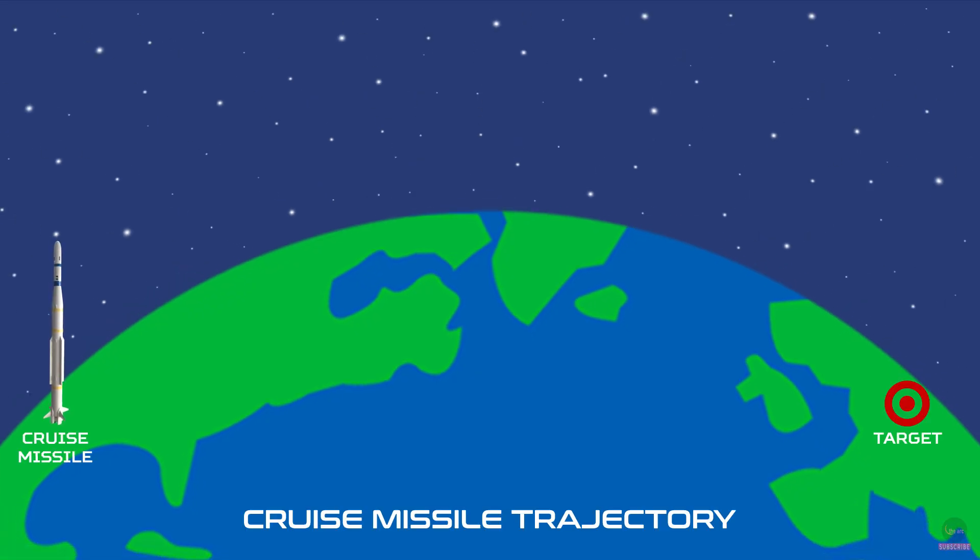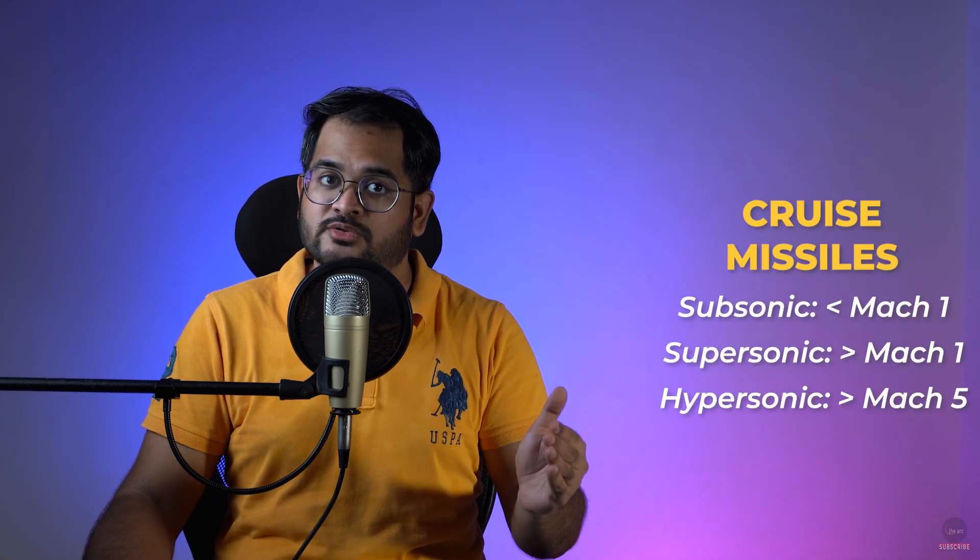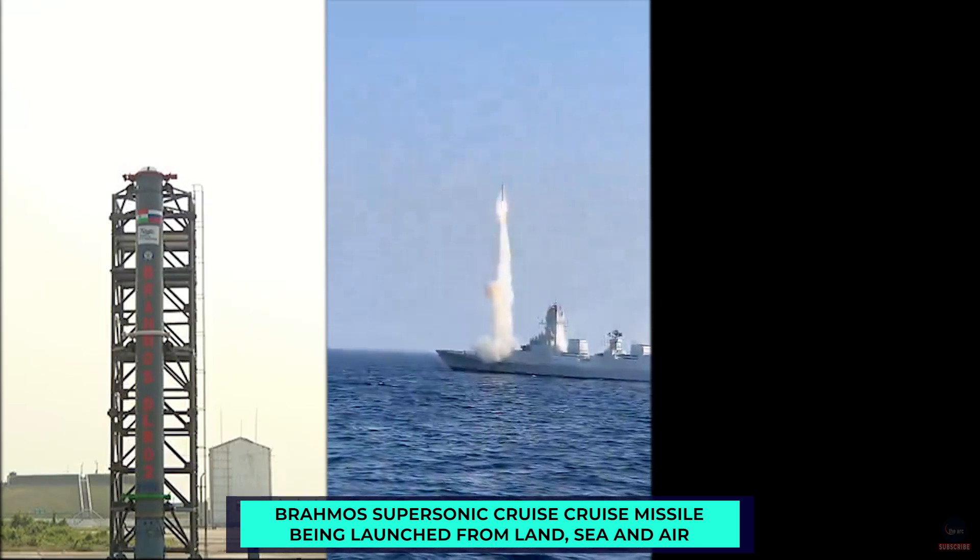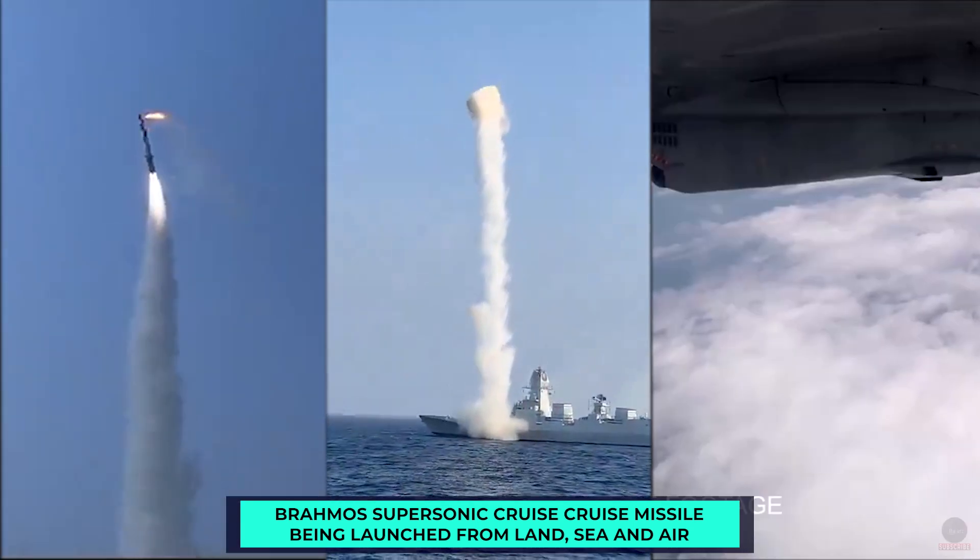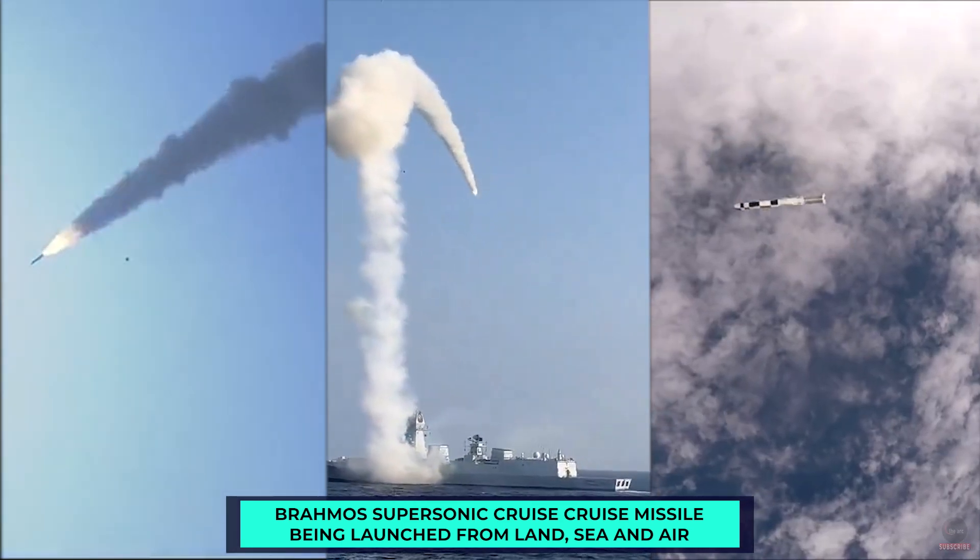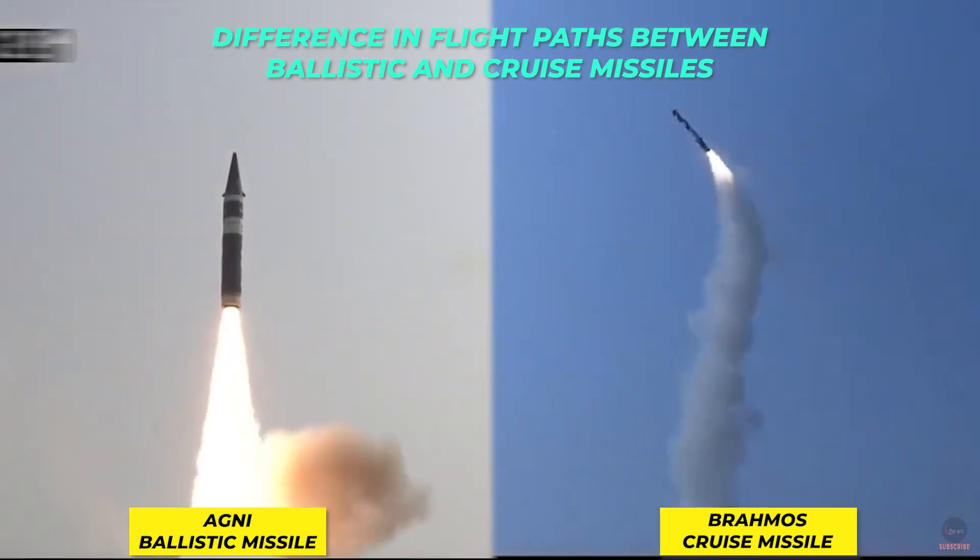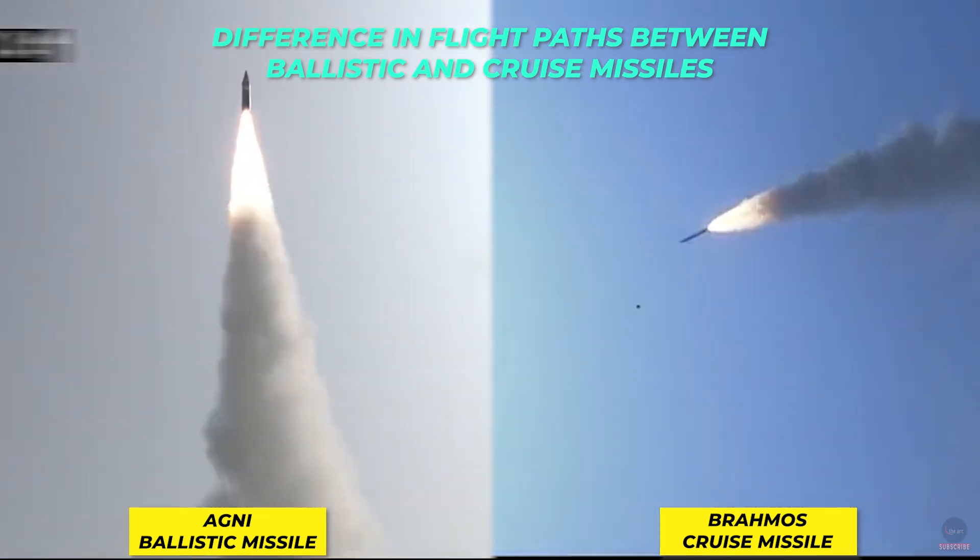Cruise missiles fly within the Earth's atmosphere and use jet engines. They follow a specific flight path at low altitudes, which makes them difficult to detect and intercept. Cruise missiles have high degree of maneuverability and accuracy. Depending on speed, they are classified as subsonic, supersonic and hypersonic. They can carry both conventional and nuclear warheads and can be launched from land, sea, air and submarines. BrahMos and ITCM are India's cruise missiles. You can clearly see the difference in flight paths between the Agni ballistic and BrahMos cruise missiles.